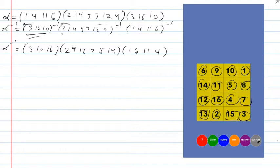So if I could do just one move, this move would actually restore the puzzle, because when you compose something with its inverse, it restores it. But since this is not one of the legal moves, I'm going to factor these cycles.